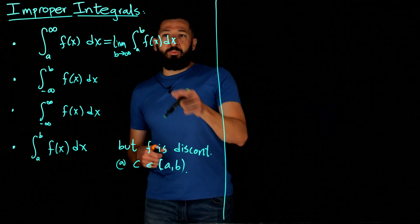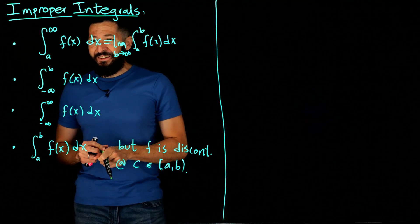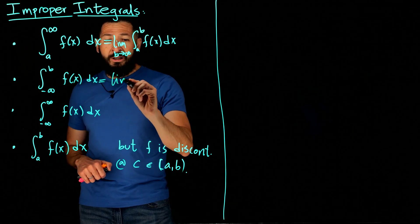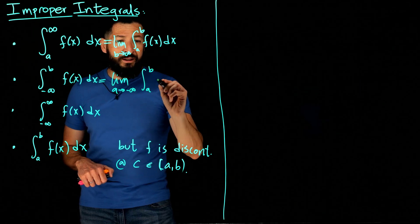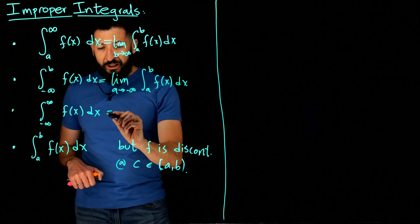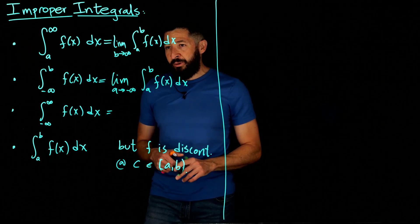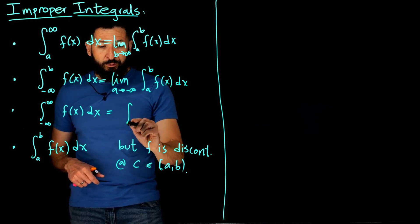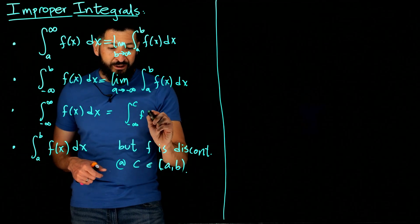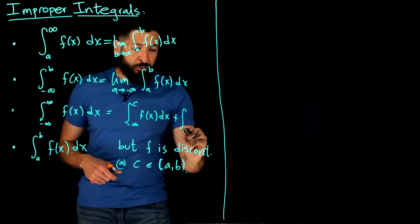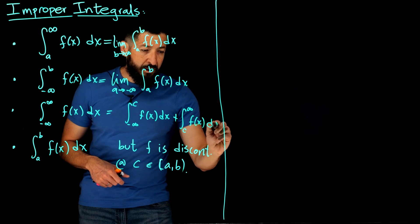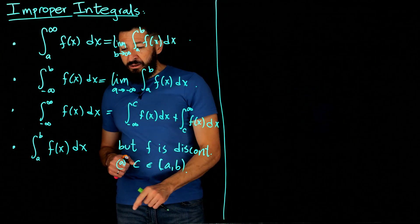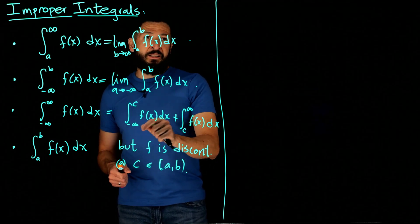If you try to evaluate at infinity, you would not be applying the second fundamental theorem of calculus correctly. For the negative-infinity-to-constant case, you can do the limit as A goes to negative infinity of the integral from A to B. For the negative infinity to infinity case, we're going to break this integral as the integral from negative infinity to some value C, then from C to positive infinity. We then break it from A to C and from C to B, taking the limit and checking whether it converges.